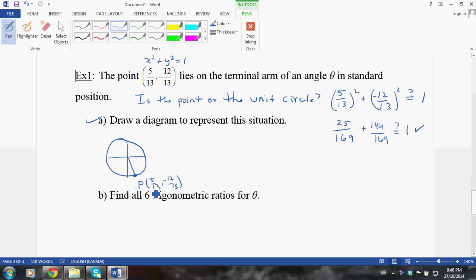Part B says find all six trig ratios for theta. If we start off and just make it clear in our minds what x is, it's 5 over 13 and y is equal to negative 12 over 13. Now, if you have to peek back at the last question, that's fine. But, the six trig ratios are cos of theta.